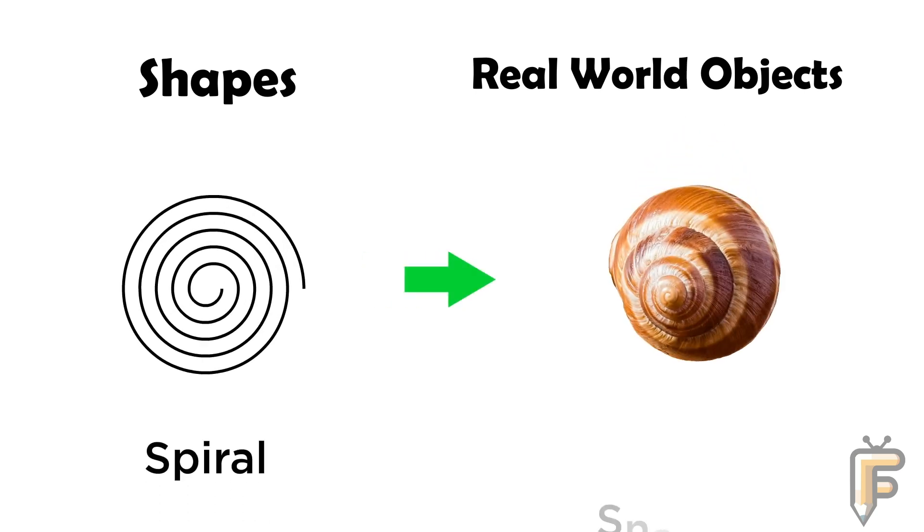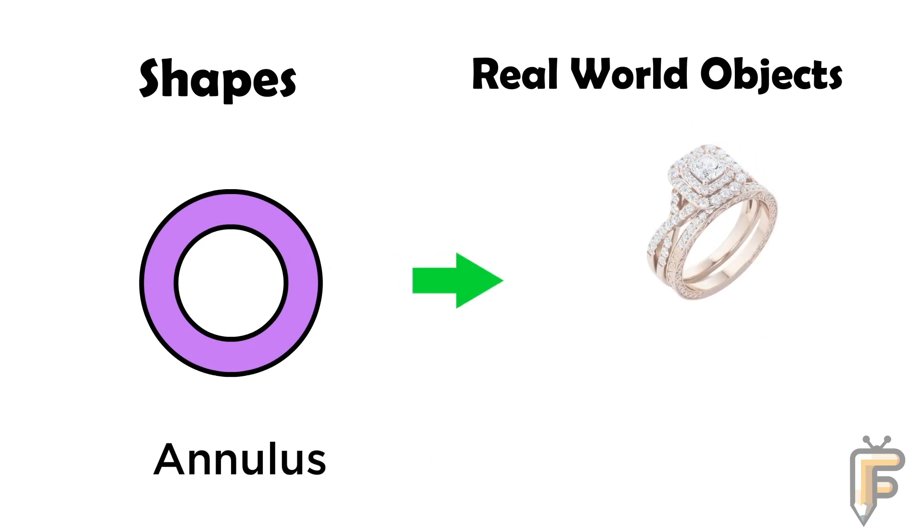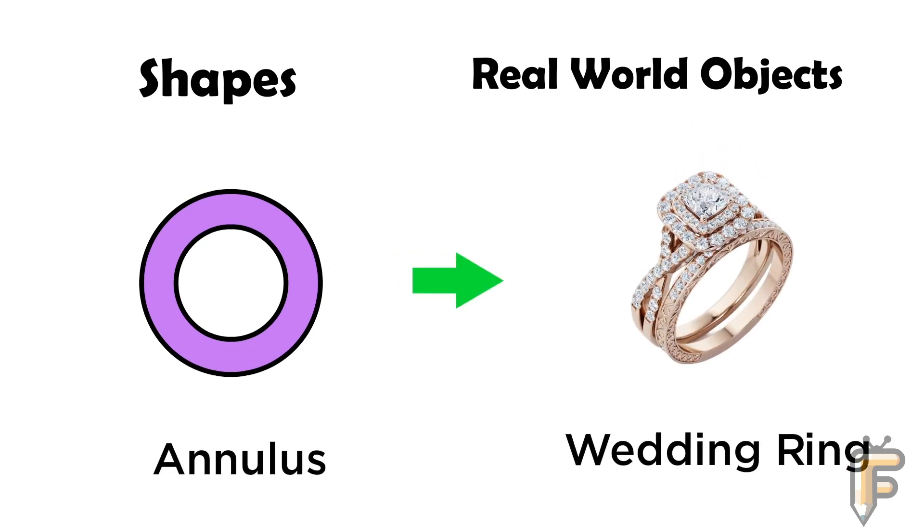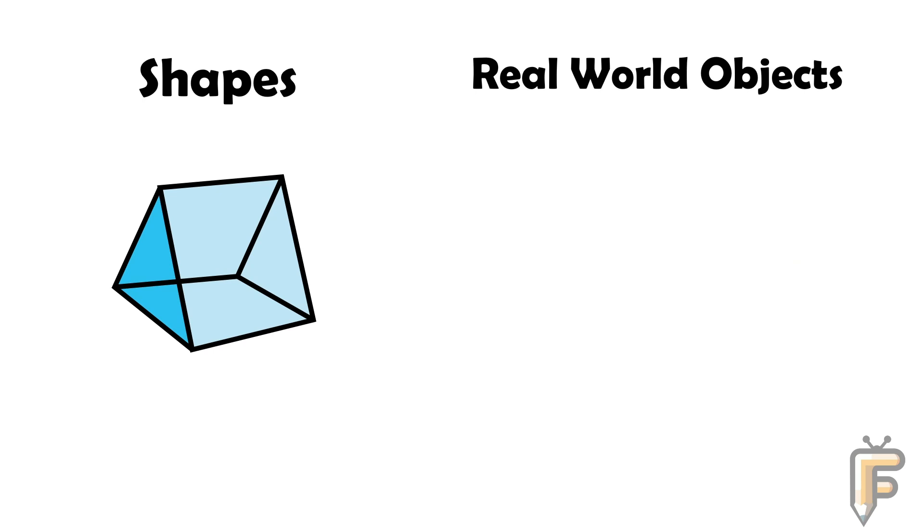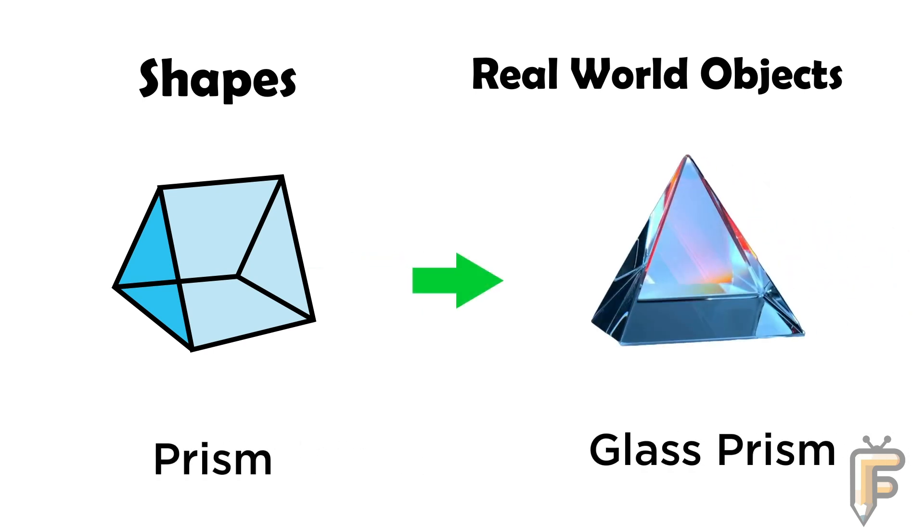Spiral: snail shell is spiral shape. Annulus: wedding ring is annulus shape. Prism: glass prism.